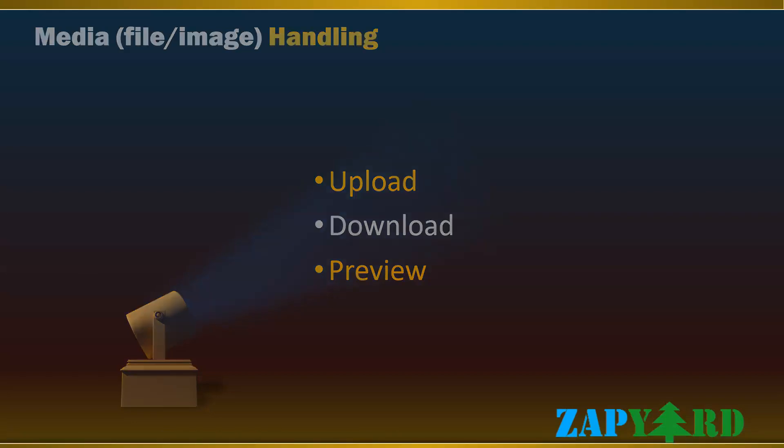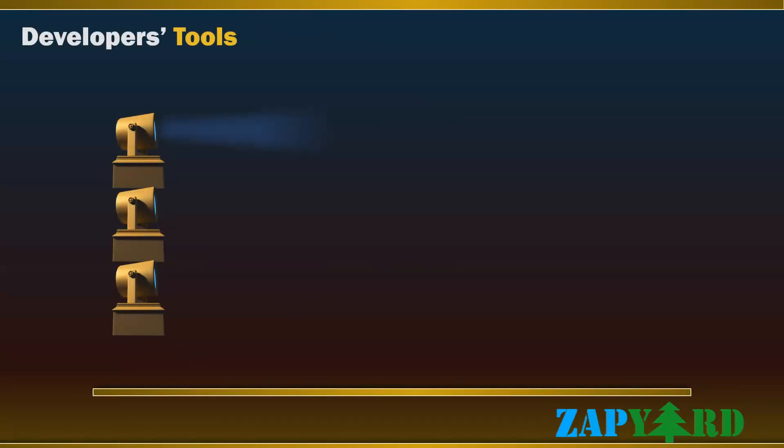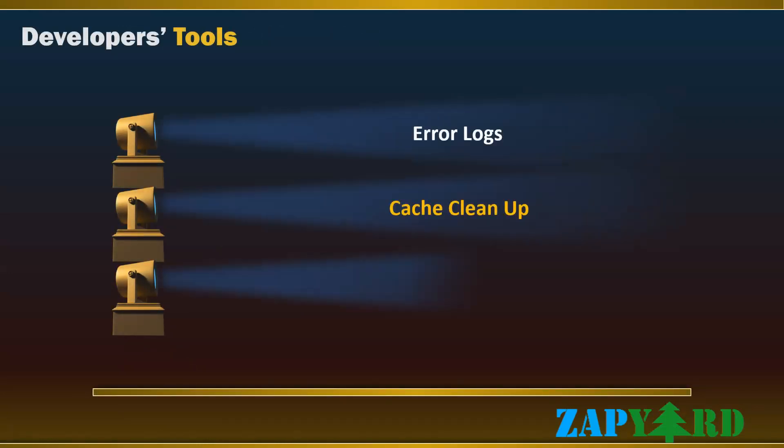We always believe that a good developer is not one who only writes good programs, but one who can analyze and figure out the root causes of someone else's code. To empower our participants with these skills, the trainer will show how to find and analyze error logs, teach tracing techniques, and how to work with the cache for OData services.